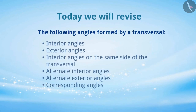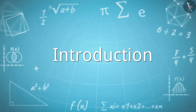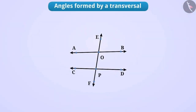Today, we will revise the following angles formed by a transversal. Children, in the previous two videos, we have learned about the angles formed by a transversal. Let us revise all of them together. When we draw two lines AB and CD and a transversal of these two lines EF which intersects line AB at O and line CD at P.